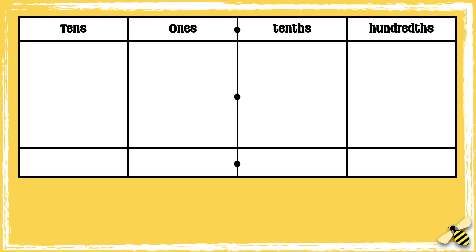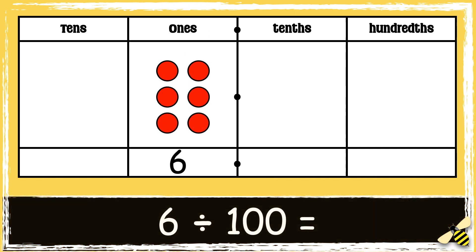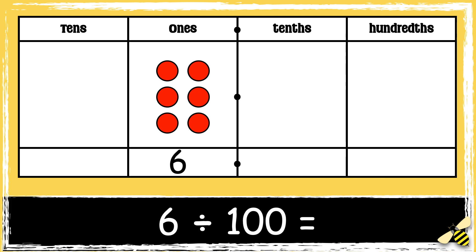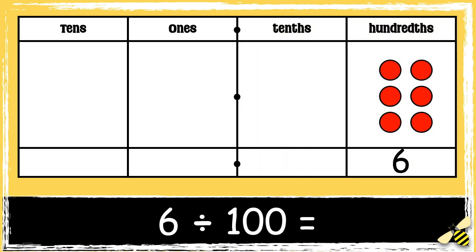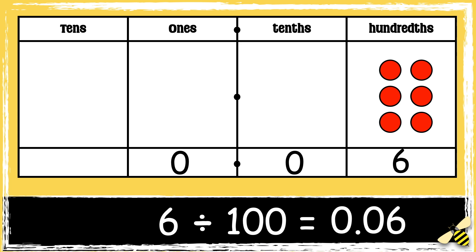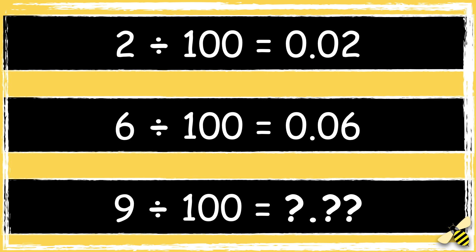Here's another one: six divided by a hundred. When we divide a number by a hundred we move the digits two places to the right, so six ones become six hundredths. We need to use zero as a placeholder to show that there are no ones. We also need zero as a placeholder to show that there are no tenths. So the answer is zero point zero six. Now it's your turn — what is nine divided by a hundred? Let me know your answer in the comment section.